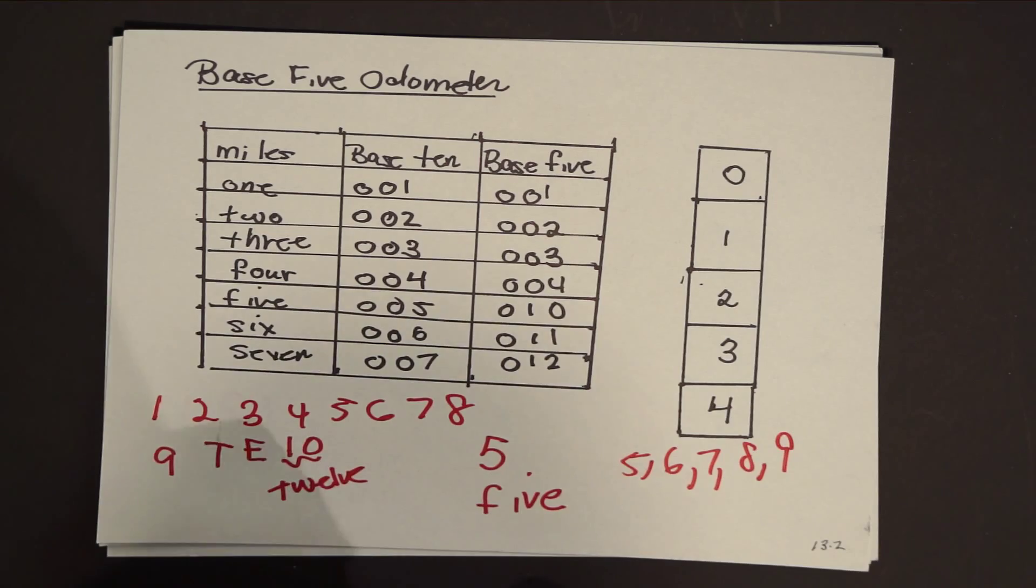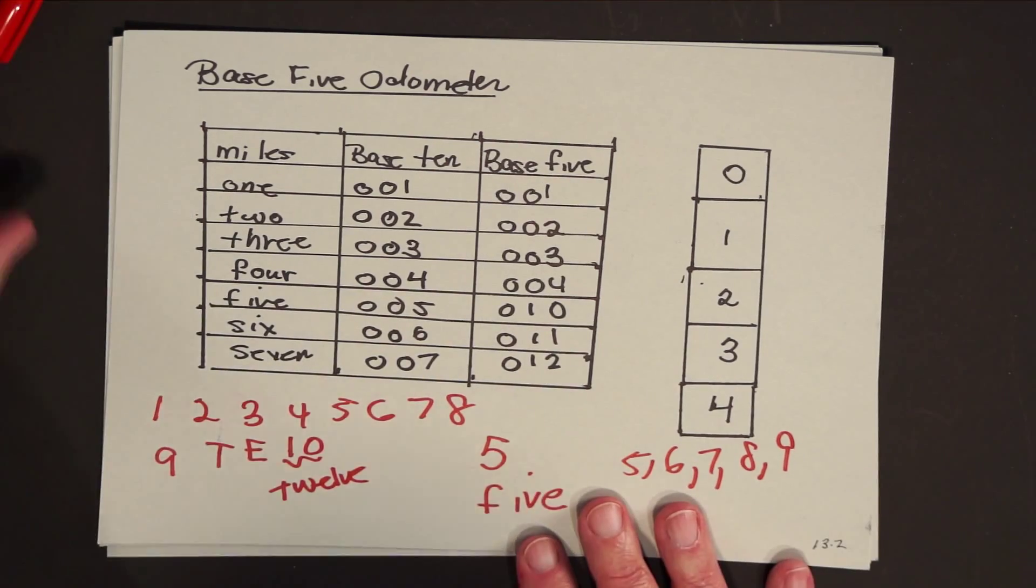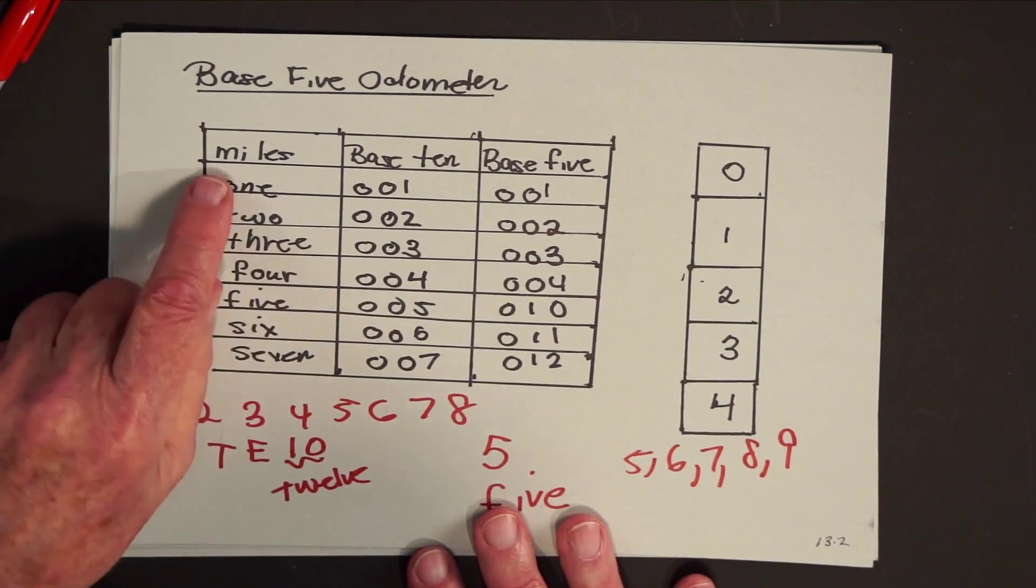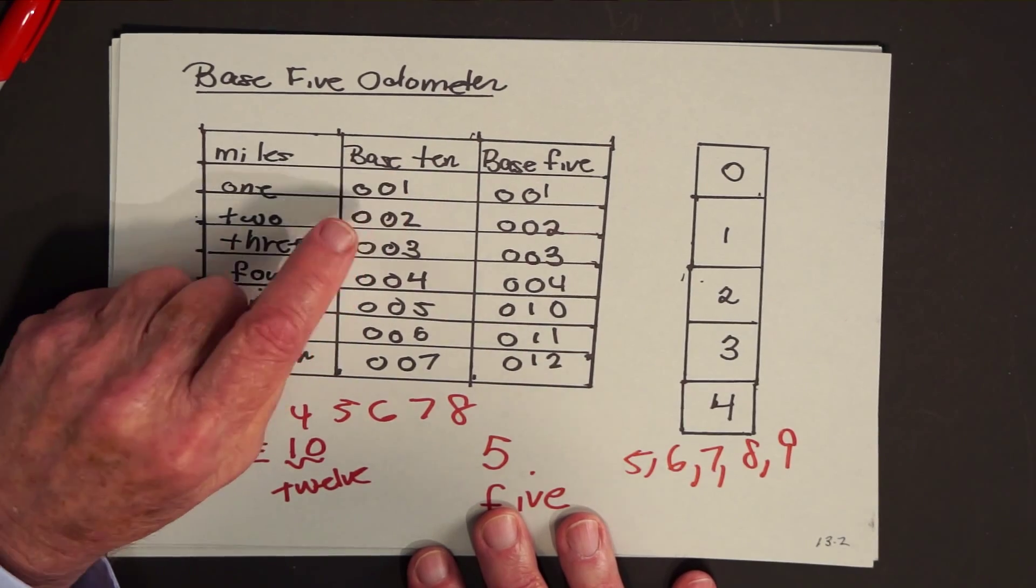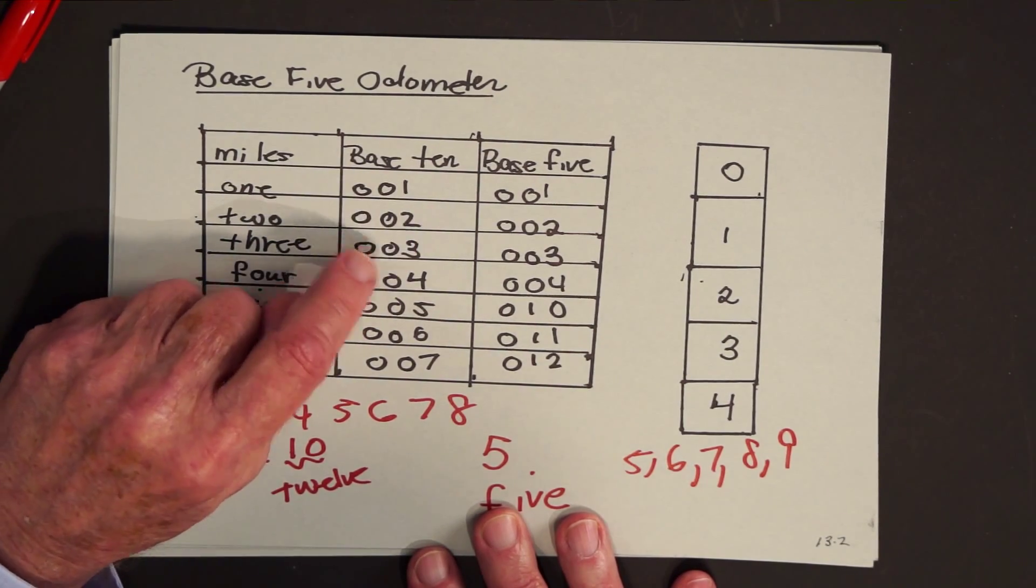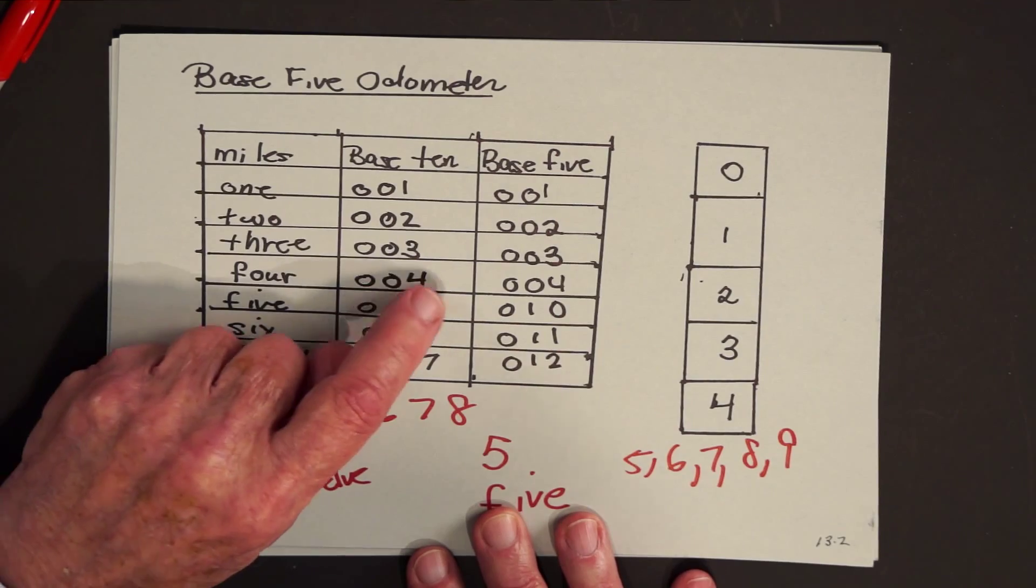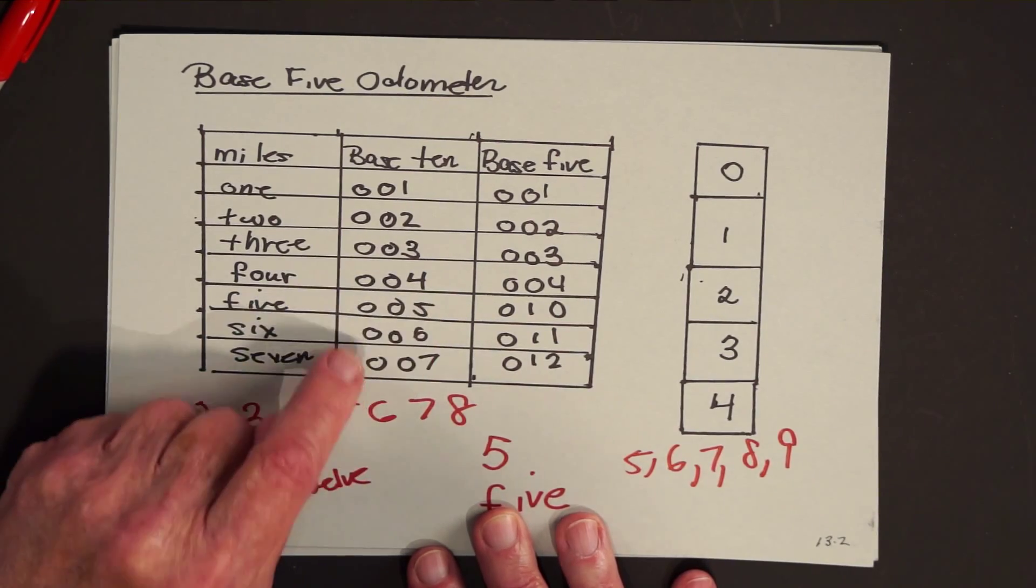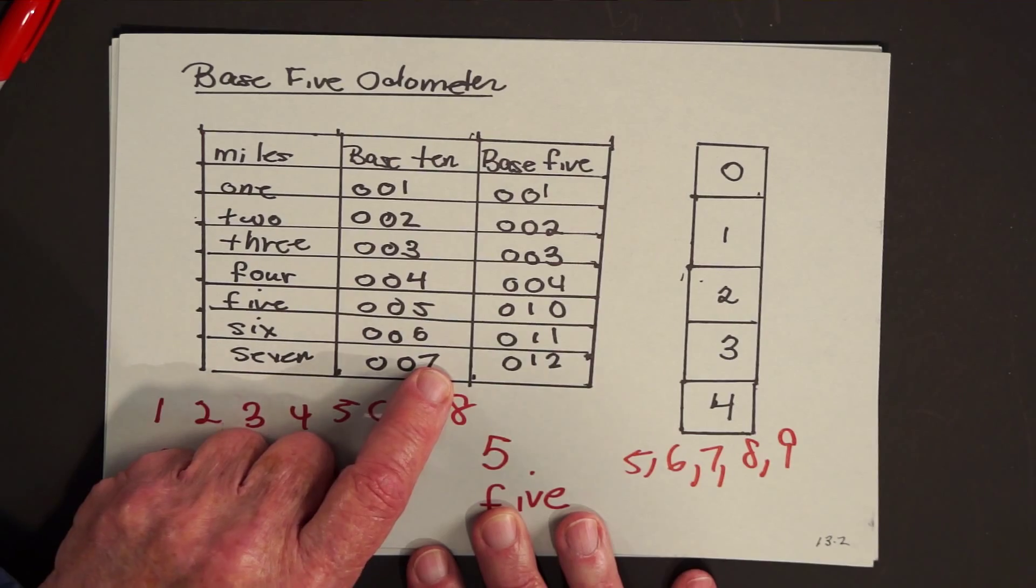So let's see what would happen on the base five odometer. On base 10, you would see 001, 002, 003, 004, 005, 006, 007.